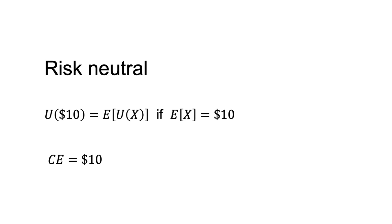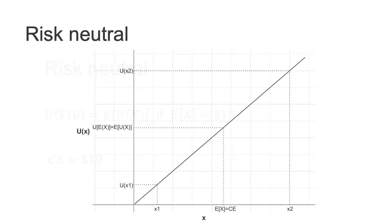Risk neutrality. A risk-neutral person is an expected value maximiser. They are indifferent between $10 for certain and a gamble with an expected value of $10. The certainty equivalent of the prospect for a person considering this gamble would also be $10. The following chart illustrates. Again, we have two possible outcomes, x1 and x2, with resulting utility u of x1 and u of x2. A line between the points on the utility curve for each of those outcomes lies on the utility curve itself. For any probability, the utility of the expected value and the expected utility are the same.